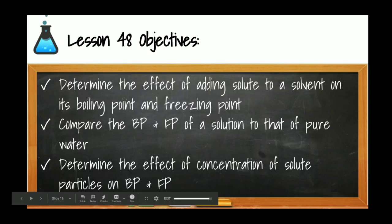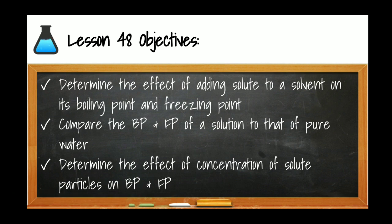Hi class, welcome to lesson 48. In this lesson on colligative properties, we will determine the effect of adding a solid to a solvent on its boiling point and freezing point. We will compare the boiling point and freezing point of a solution — a homogeneous mixture — to that of a pure substance. You can use guided notes found on Google Classroom or take your own, but your notes will be checked.